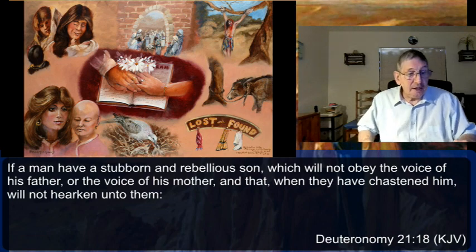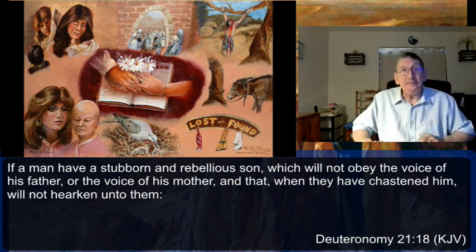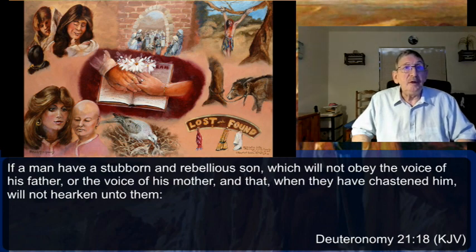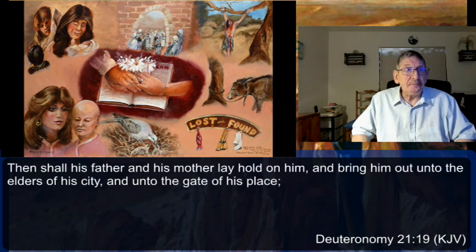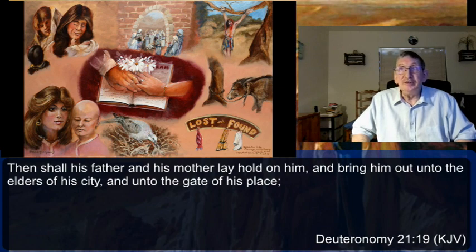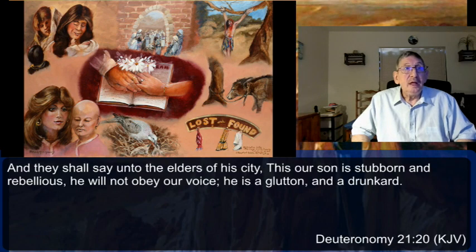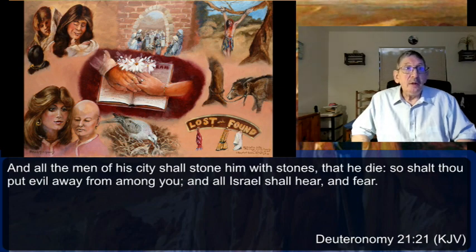'If a man have a stubborn and rebellious son which will not obey the voice of his father or the voice of his mother, and when they have chastened him will not hearken unto them, then shall his father and his mother lay hold on him and bring him out unto the elders of the city and unto the gate of his place.' All this was done at the gate of the city. 'They shall say, This our son is stubborn and rebellious, he will not obey our voice; he is a glutton and a drunkard. And all the men of the city shall stone him with stones that he die, so shalt thou put evil away from among you, and all Israel shall hear and fear.'